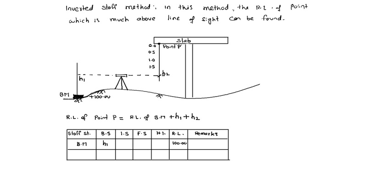Then at slab bottom, we have kept the staff inverted, with the bottom touching the bottom of the slab. That reading we should keep in foresight but with negative sign: minus h2.